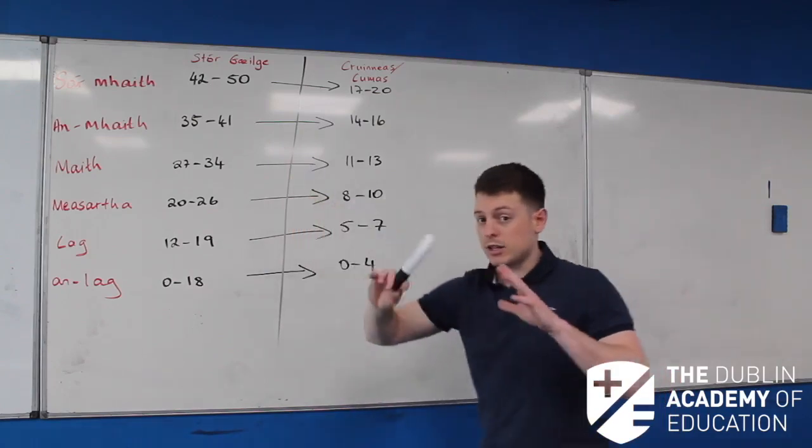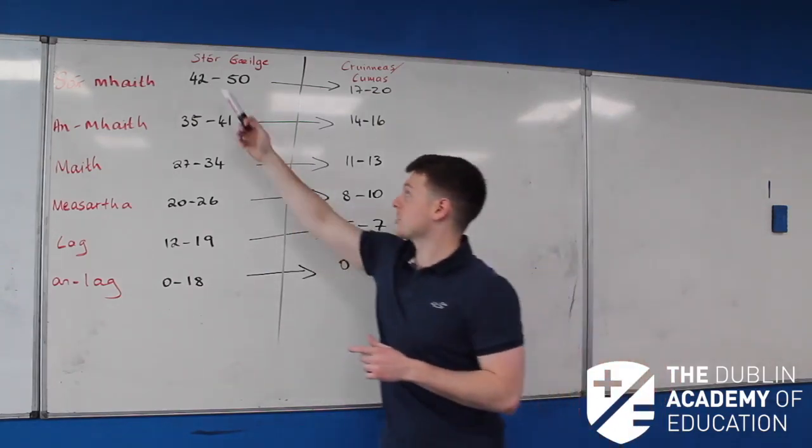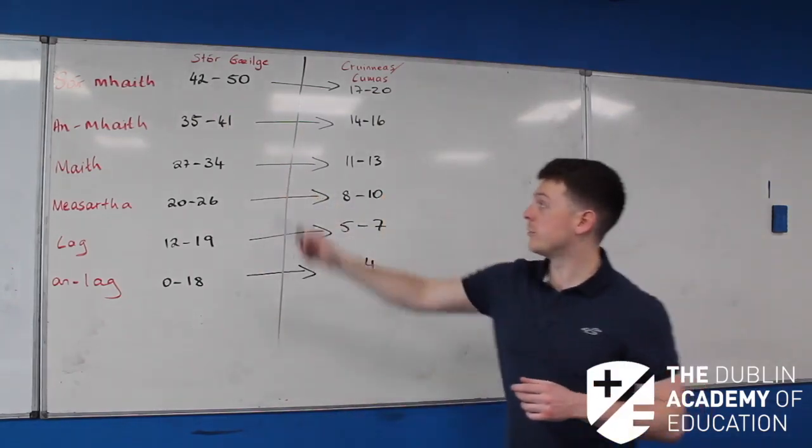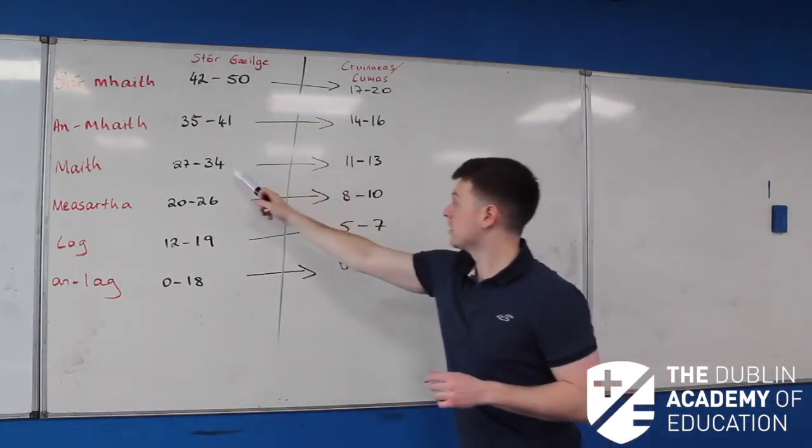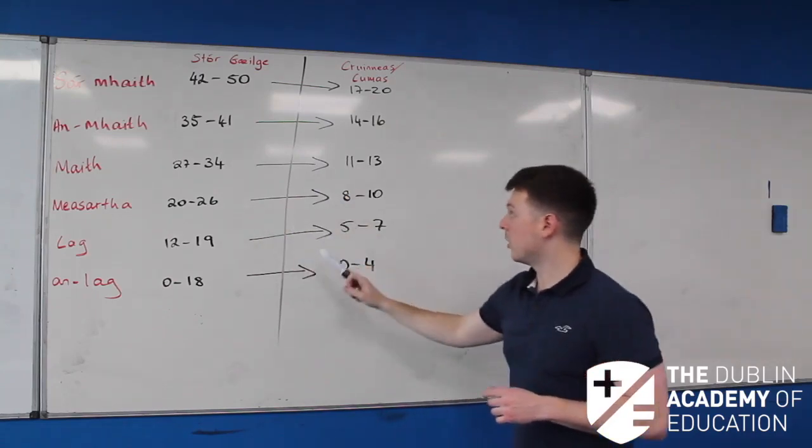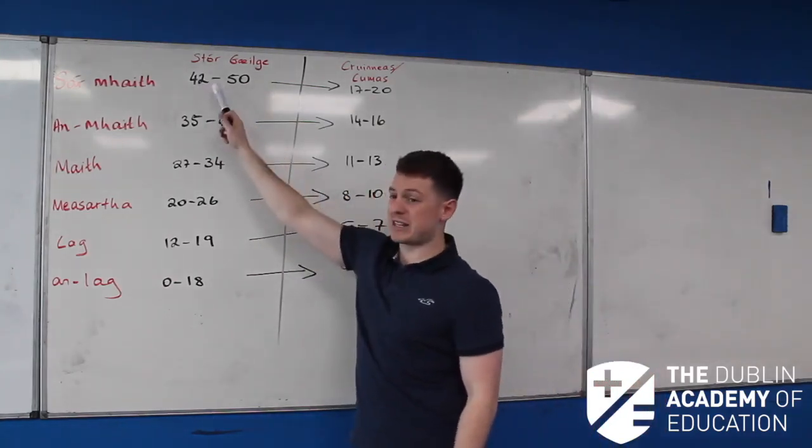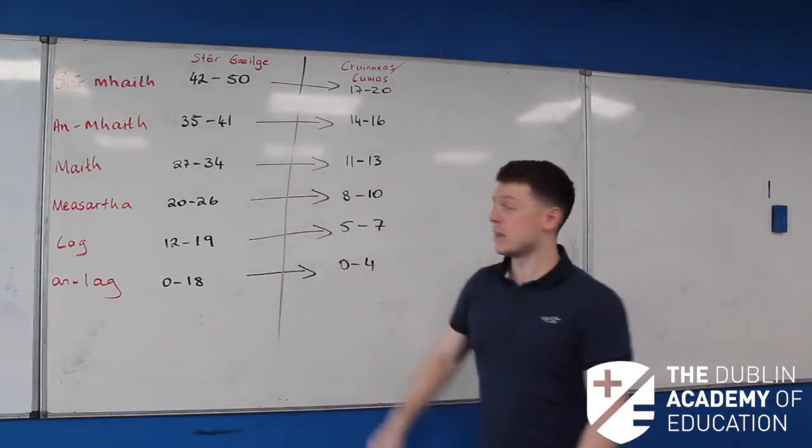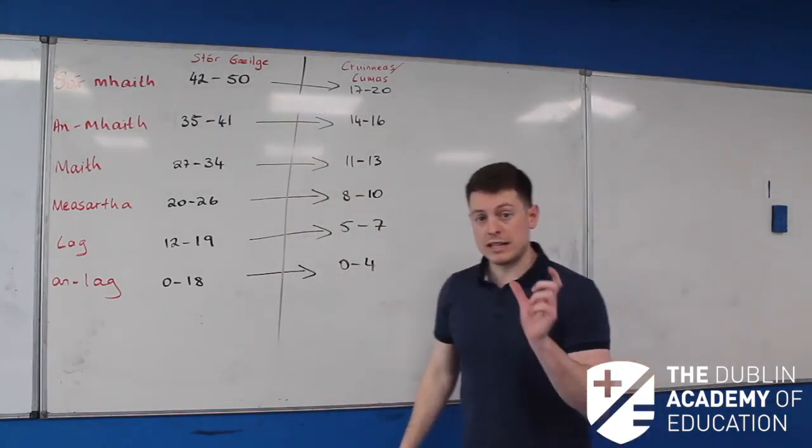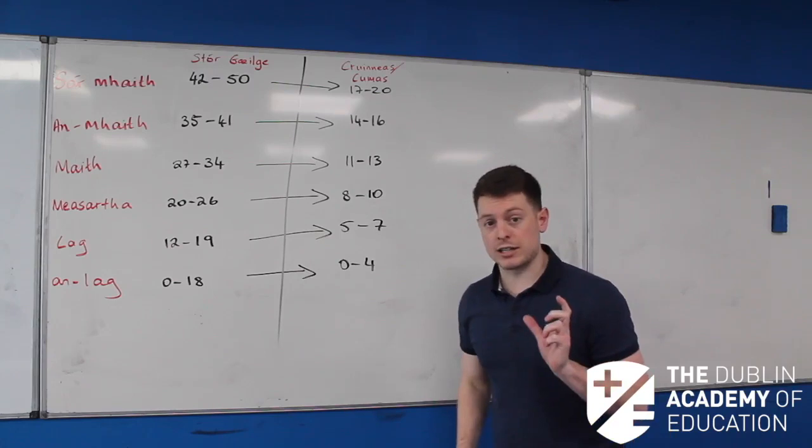Usually, not all the time, but usually, if somebody scores around 53, 54, sorry, 43, 44 up there, it's usually a sliding scale, that you go down to the one below. So, this one, let's say your vocab is excellent, but your crinus is just very good. It's very rare that somebody gets in the same bracket. So, it's really important when you are learning these.